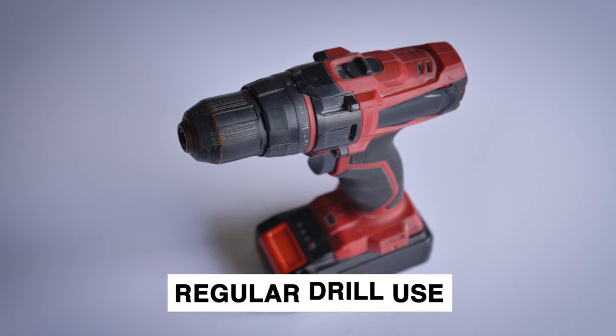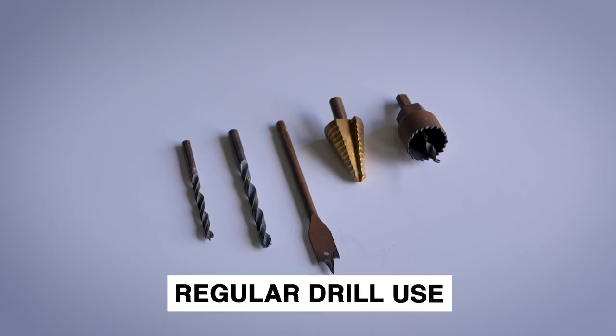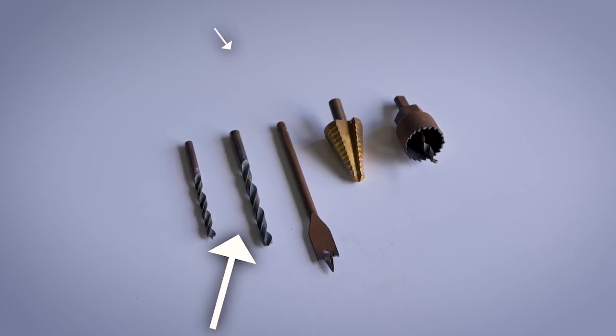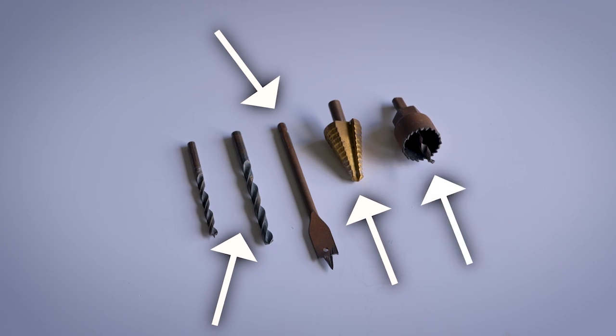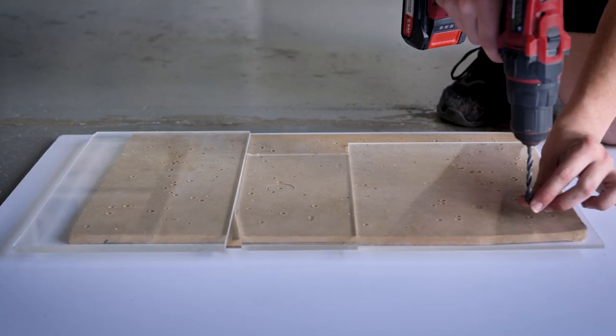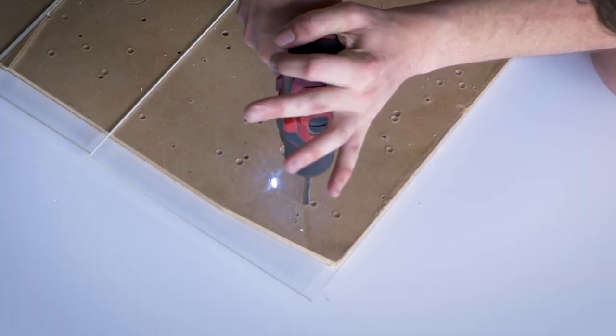Here's a compilation of drilling with a regular drill. This includes different drill bits such as the twist drill bit, paddle drill, step drill, and hole saw. We will also showcase drilling through three different widths of plastic.